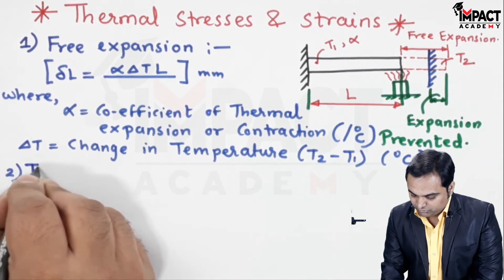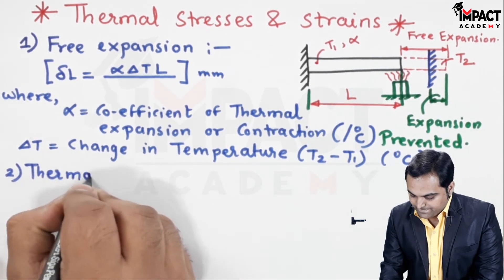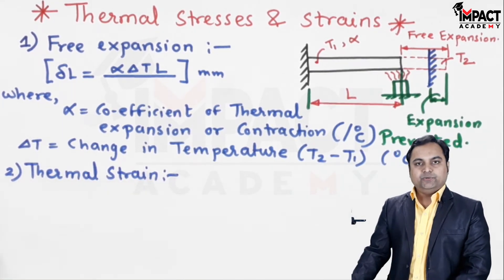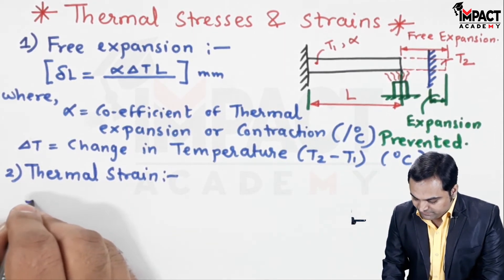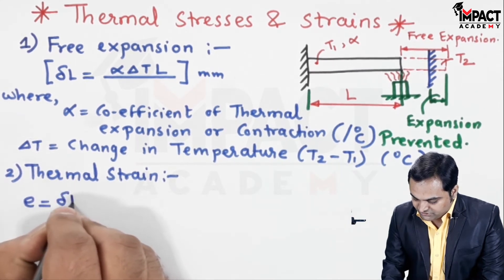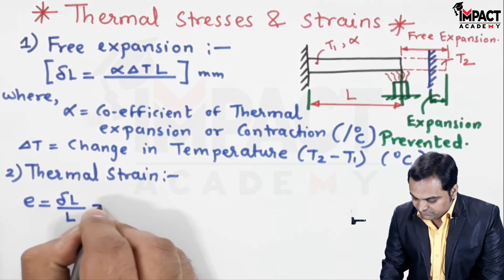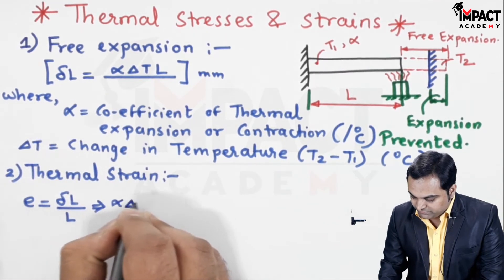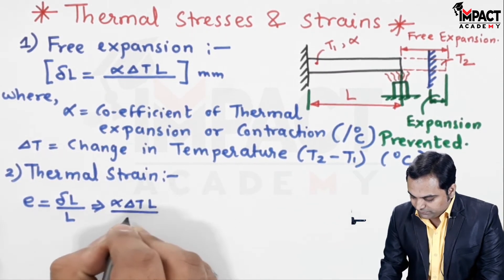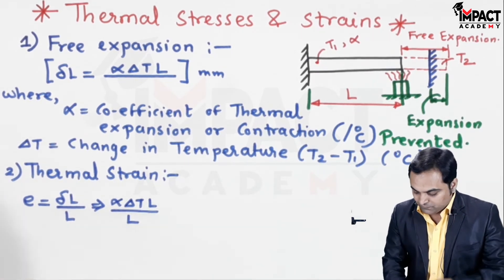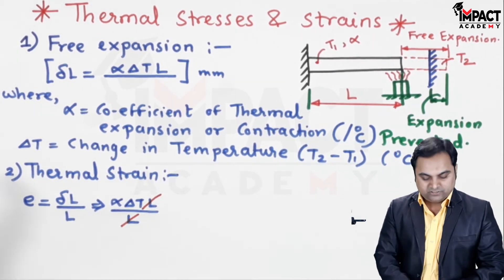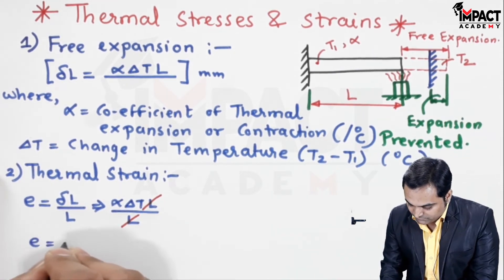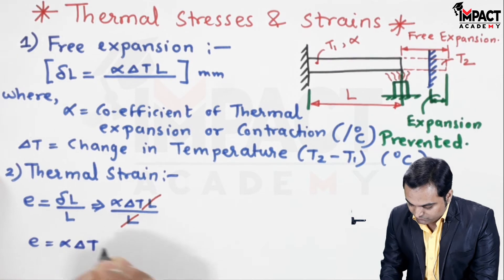Then after free expansion, I'll write down thermal strain or temperature strain. Thermal strain, like in longitudinal strain, it is denoted by small e, and that is given by change in length upon original length. So change in length is this deflection which is alpha into Delta T into L divided by L. From the numerator and denominator L gets cancelled out, so strain is alpha into Delta T, which is called as the thermal strain or temperature strain.